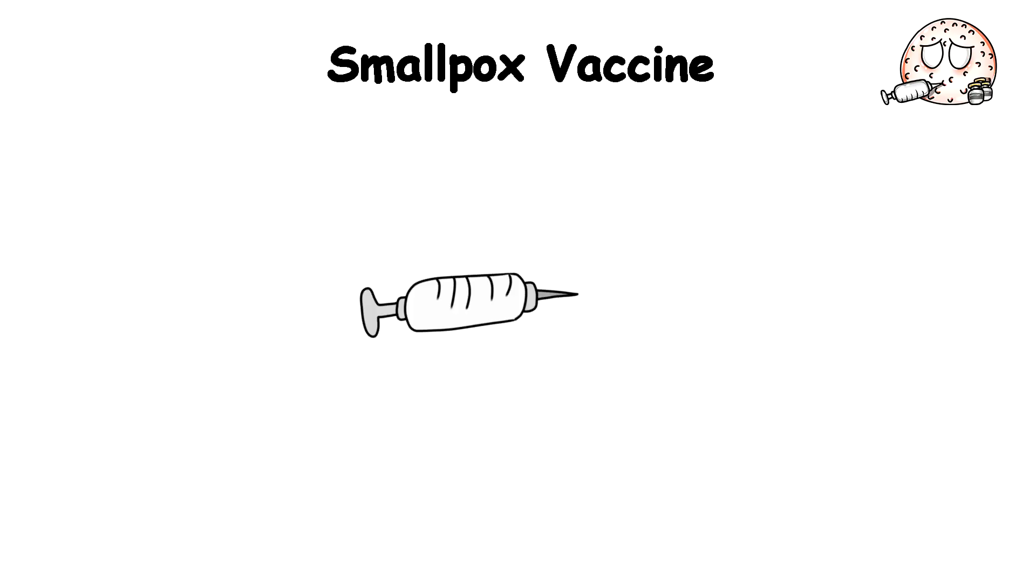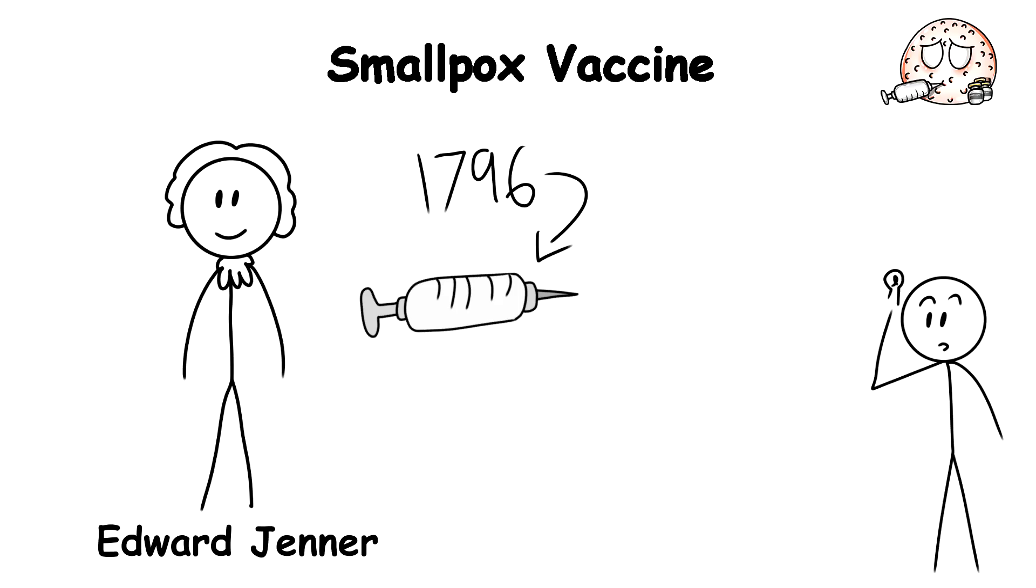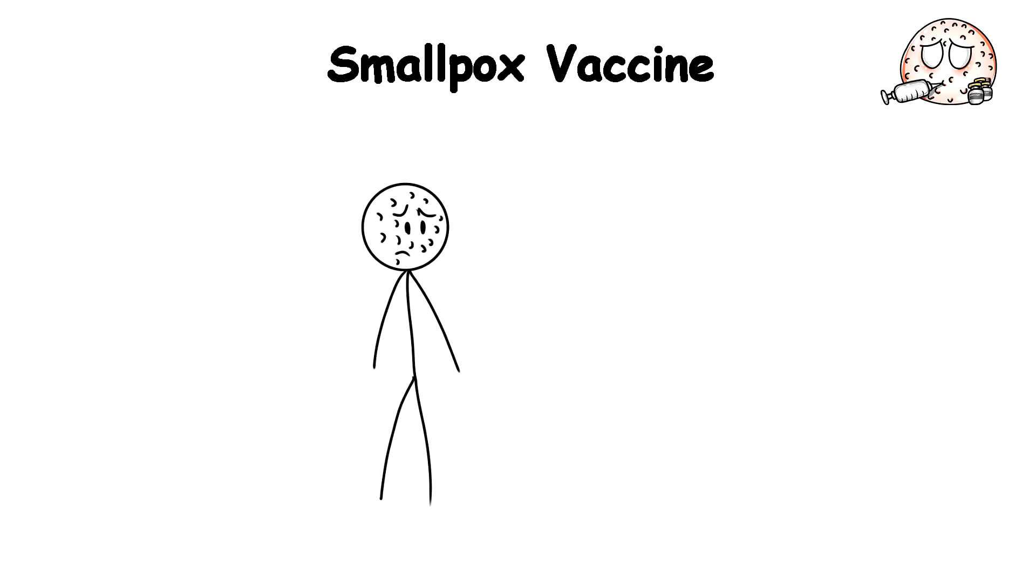The smallpox vaccine was invented in 1796 by the English physician Edward Jenner. Jenner's idea was to intentionally infect people with the much milder virus from cowpox blisters, which he noticed gave milkmaids immunity to smallpox.